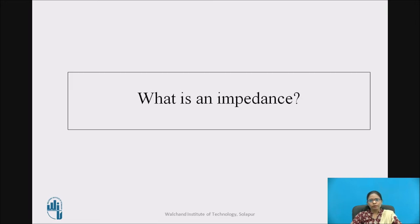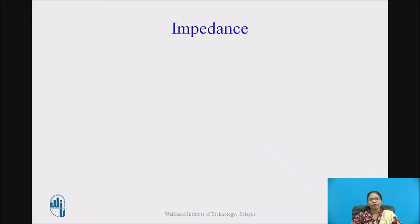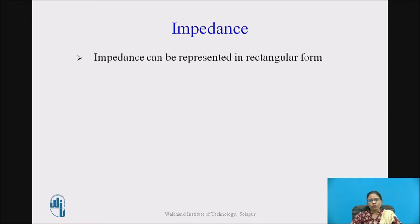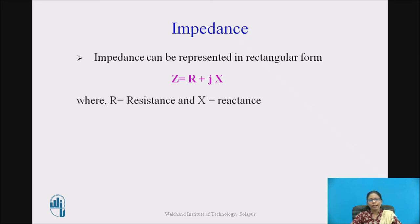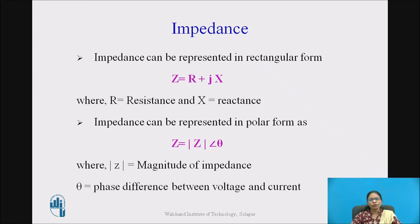What is impedance? Electrical impedance is the measure of opposition that a circuit presents to a current when voltage is applied. It is named as complex impedance. Impedance can be represented in rectangular form as Z = R + jX, where Z is the impedance, R is resistance and X is reactance. Impedance can also be represented in polar form as Z = |Z|∠θ, where |Z| is the magnitude of impedance and θ is the phase difference between voltage and current.